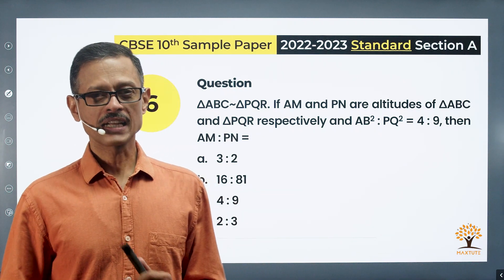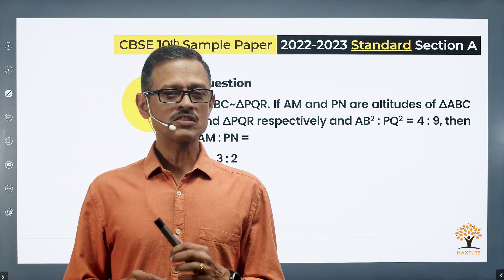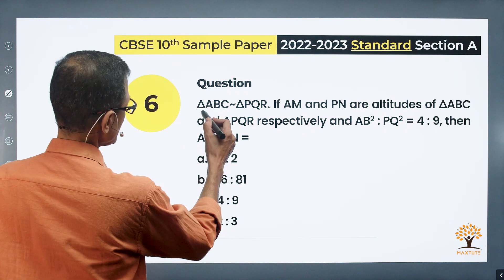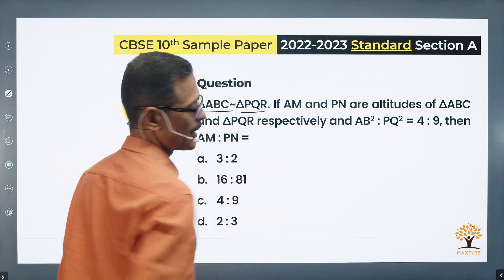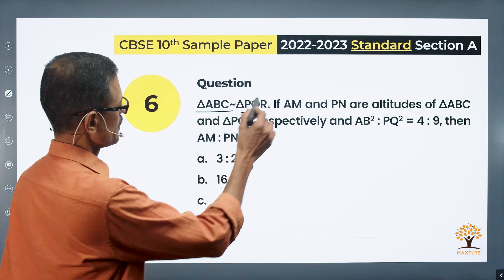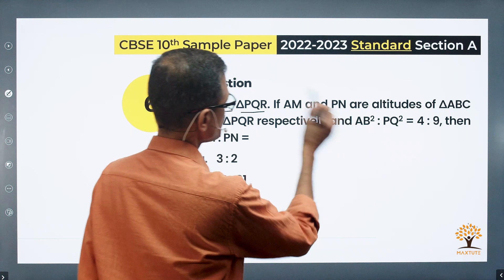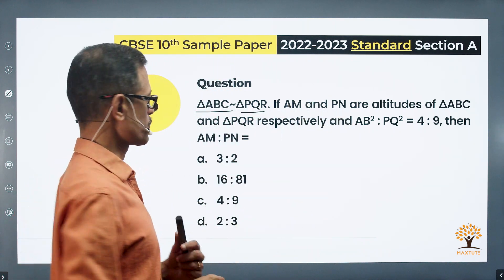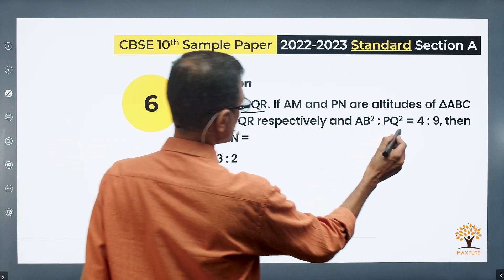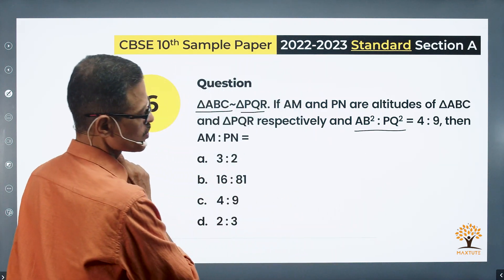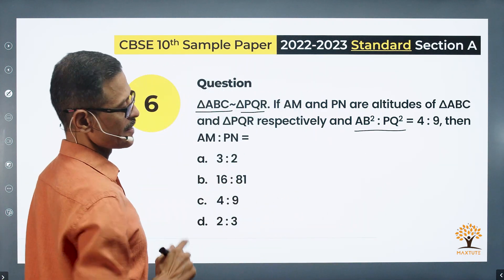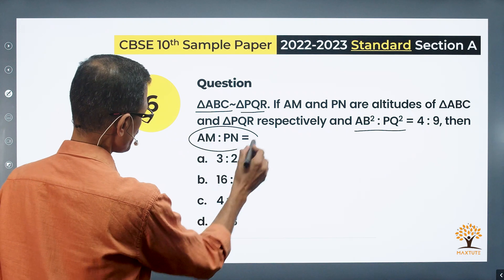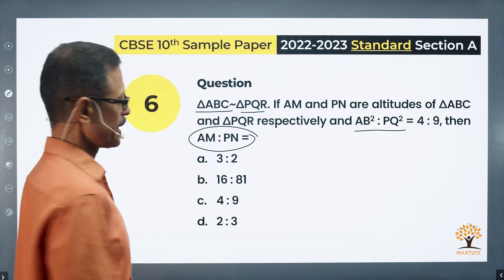Question 6. This is from the chapter Triangles. The concept tested is similarity of triangles. Triangles ABC and PQR are similar triangles. AM and PN are altitudes of ABC and PQR respectively. The given ratio is AB² to PQ² equals 4 to 9. What we need to find out is AM to PN.